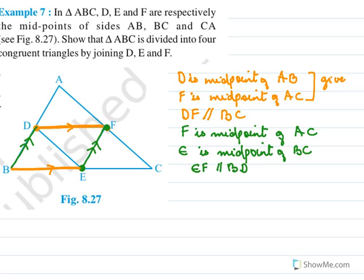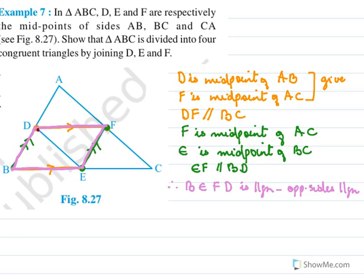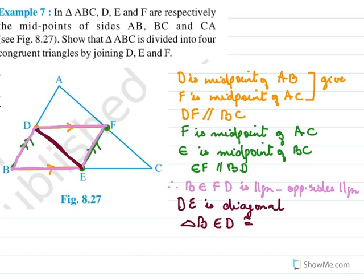We have DF parallel to BC and EF parallel to BD, so BEFD is a parallelogram — opposite sides are parallel. The diagonal DE of this parallelogram divides it into two congruent triangles. So triangle BED is congruent to triangle FDE by the property that a diagonal of a parallelogram divides it into two congruent triangles.